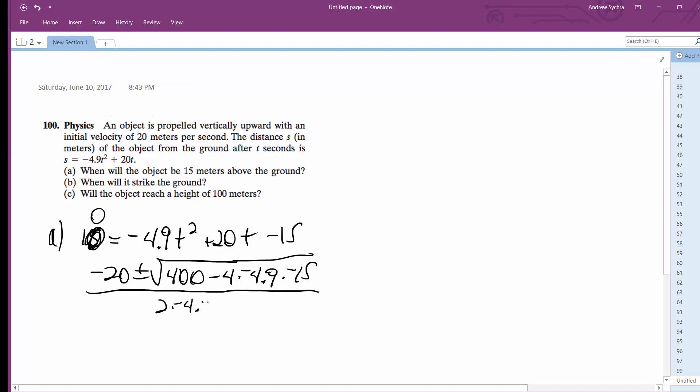So we end up getting T is equal to roughly negative one or six. In this case, it's going to be six seconds because you can't have a negative value.